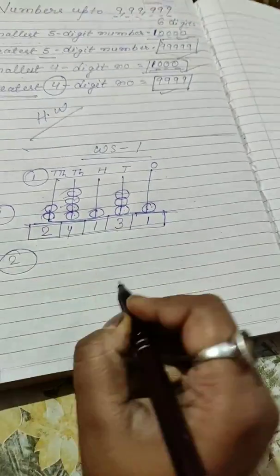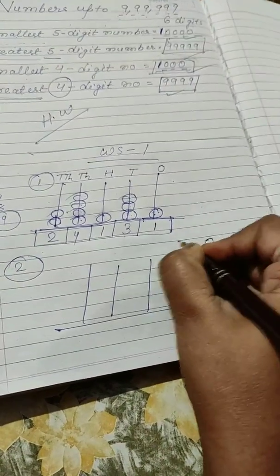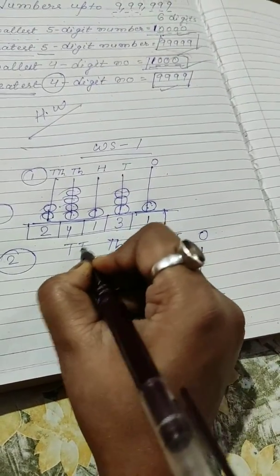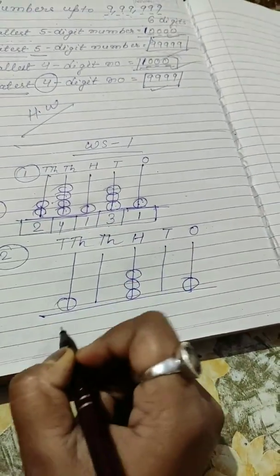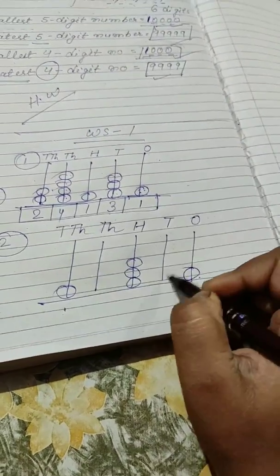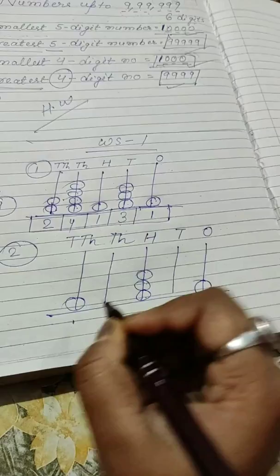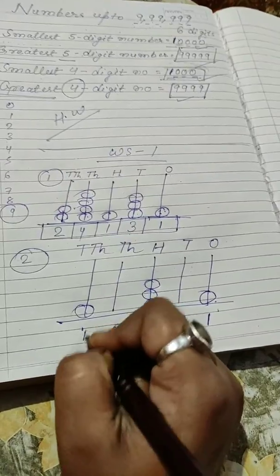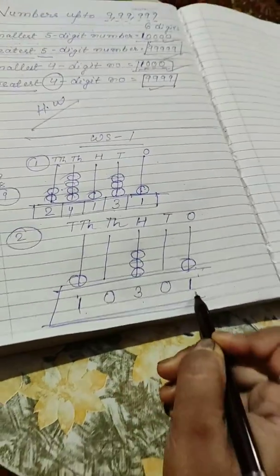I am taking one more example. Here is 1s, here is 10s, here is 1000s, here is 10,000. Just count beads from 1s: that is 1. Here is no bead, it means we have to write 0. Here is 1, 2, 3. And here is no bead, so we write 0. Here is 1 bead, so we write 1. So this number is called 10,301. Very good.